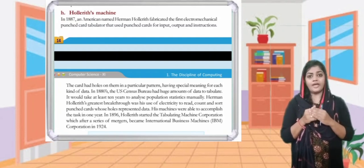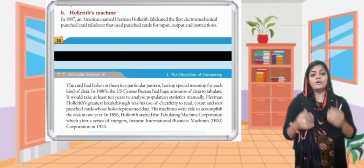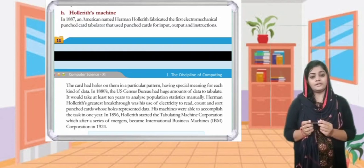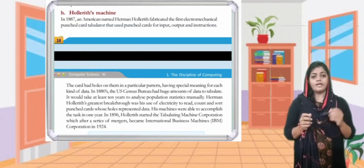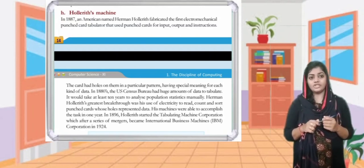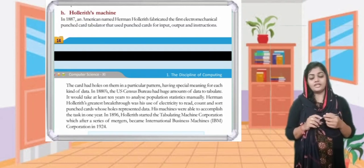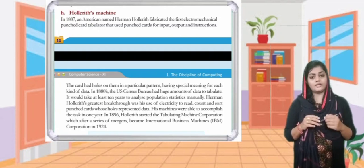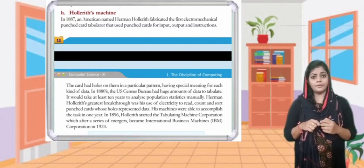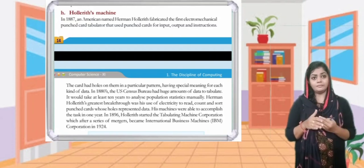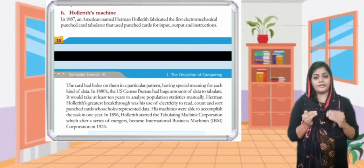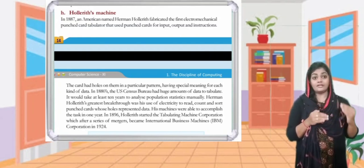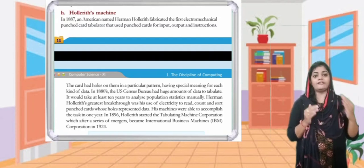These machines were able to accomplish the task in one year. In 1896, Hollerith started the Tabulating Machine Corporation which, after a series of mergers, became International Business Machines Corporation in 1924 — that is IBM.